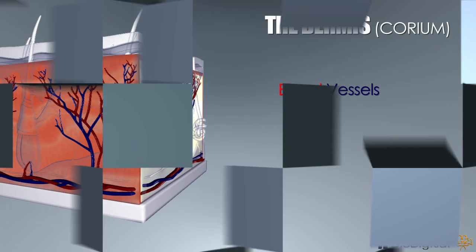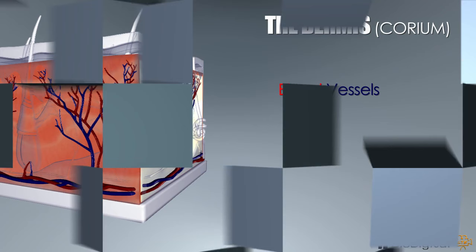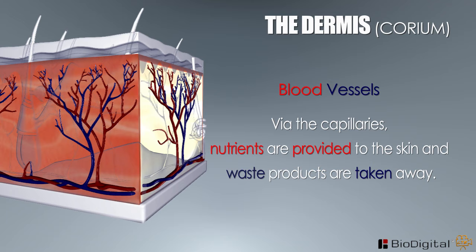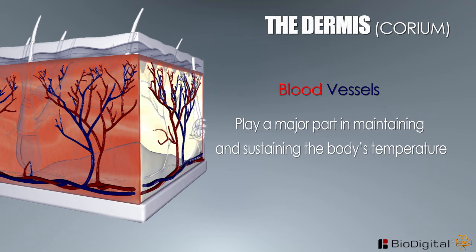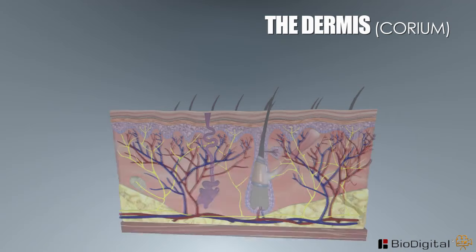Blood vessels. Via the capillaries, nutrients are provided to the skin and waste products are taken away. These blood vessels also play a major part in maintaining and sustaining the body's temperature for optimal functioning. The vessels dilate to release heat or they constrict in order to retain the body's heat.